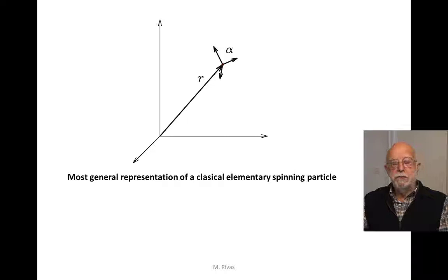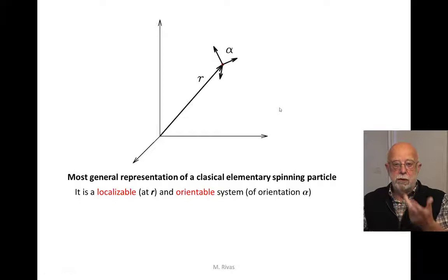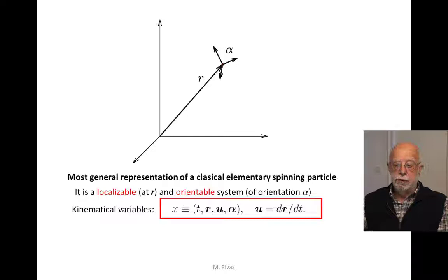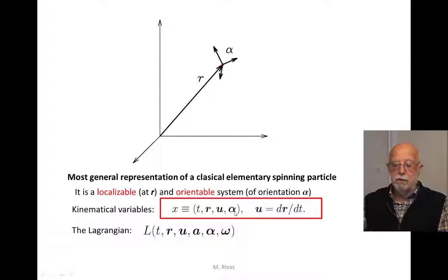The most general representation of a classical elementary particle is characterized by a point R which represents the location of the particle and also by the orientation of a co-moving Cartesian frame linked to that point. The kinematical variables, that is the boundary variables for their variational description, are position, velocity of that point, and orientation of that Cartesian frame. The Lagrangian is a function of time, position, velocity, acceleration of that point, orientation of the system, and the time derivative of the orientation — the angular velocity.